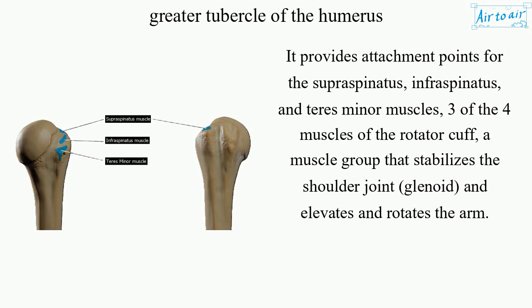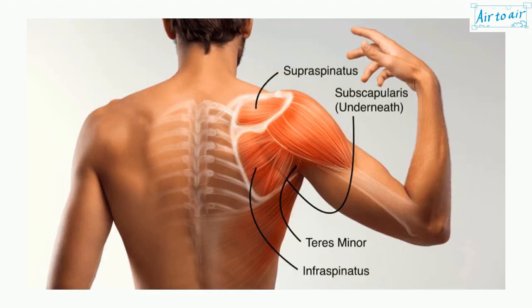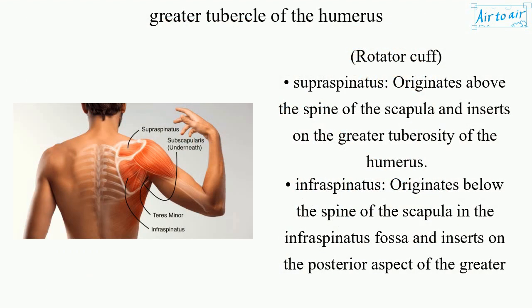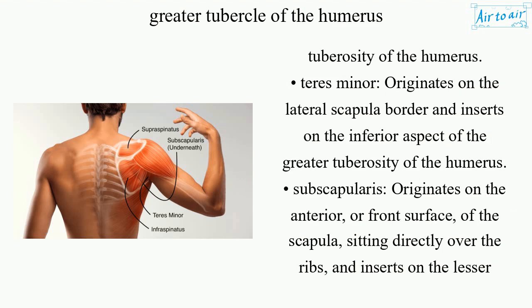The rotator cuff is a muscle group that stabilizes the shoulder joint and elevates and rotates the arm. The supraspinatus originates above the spine of the scapula and inserts on the greater tuberosity of the humerus. The infraspinatus originates below the spine of the scapula in the infraspinatus fossa and inserts on the posterior aspect of the greater tuberosity of the humerus.